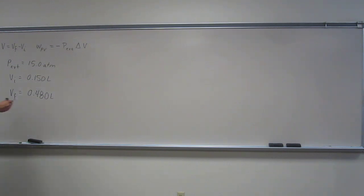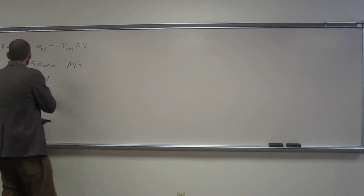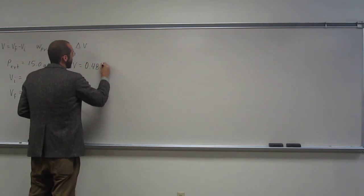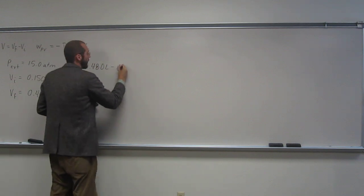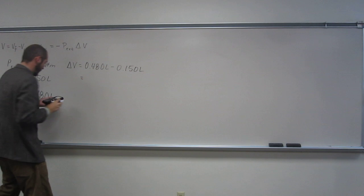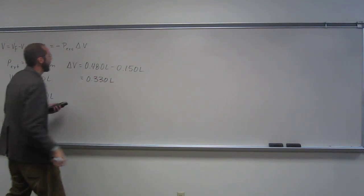So in order to figure out the delta V, it's going to be 0.480 liters minus 0.150 liters, which equals 0.330 liters.